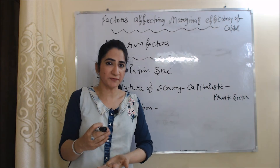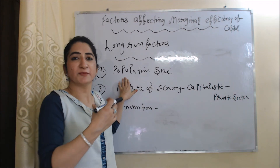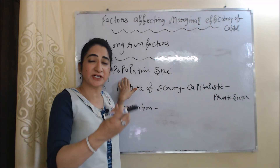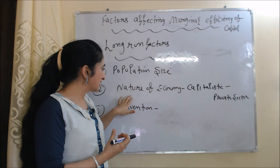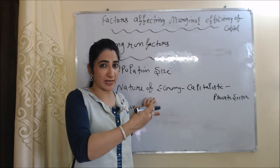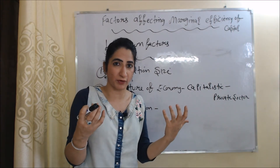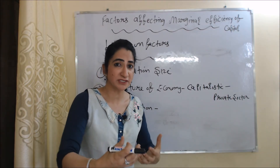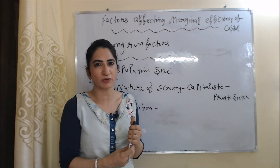Now we will talk about long-run factors affecting marginal efficiency of capital. First is population size: if population is increasing, demand increases, producer expectations about profit increase, and MEC increases. Next is nature of the economy: if the economy is capitalistic, MEC will be high, as capitalistic economies are run by the private sector which wants more profit. Next is invention: if there are more inventions and discoveries, expectations about profit will be high, and MEC will also be high.